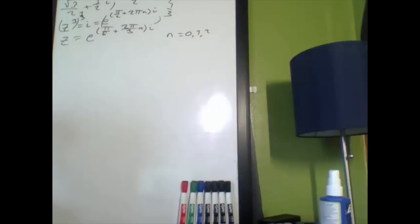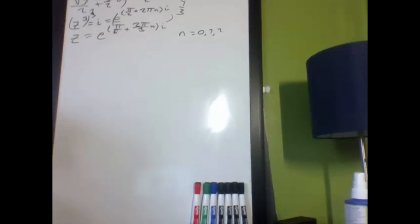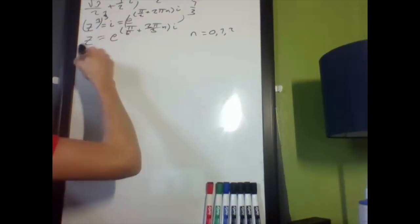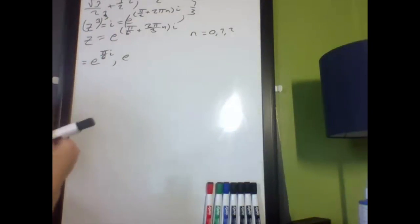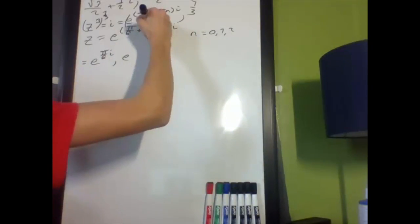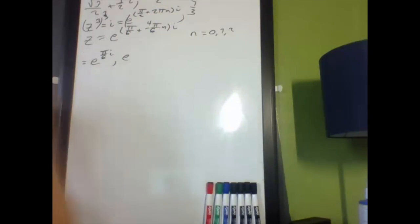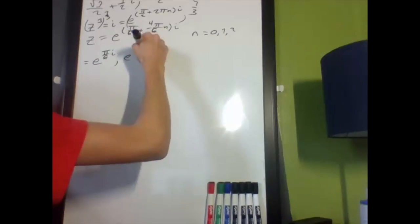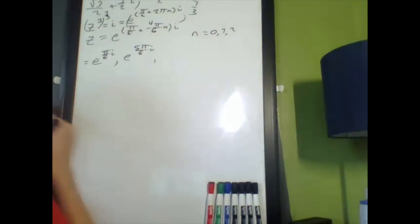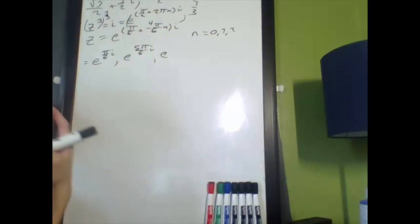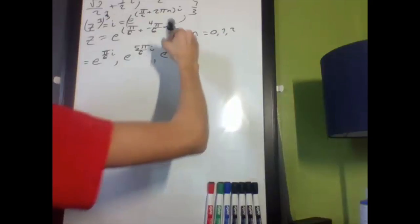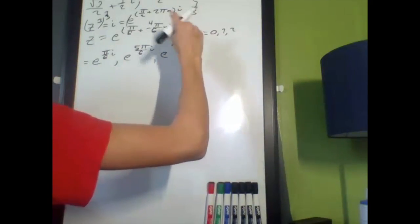So, let's write these out. I get e to the pi over 6i, and then I also get, let's rewrite this as 4 pi over 6. So, that n is going to be 1, so that's going to give us 5 pi over 6i. Then, the next one is going to give us e to the, that's going to be 2, so that's going to be 8 pi over 6. Add it there, I get 9 pi over 6, or 3 pi over 2i.